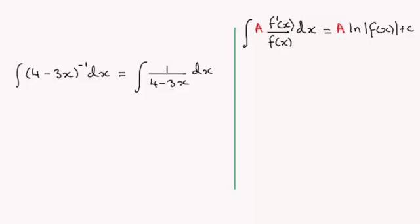Essentially what we can see here is that if I just took y equals the natural log of 4 minus 3x and I differentiated this using the chain rule, we'd have dy by dx would equal, now for the natural log of something it would be 1 over that, so it'd be 1 over 4 minus 3x, and we now multiply it by the differential of 4 minus 3x which is minus 3.